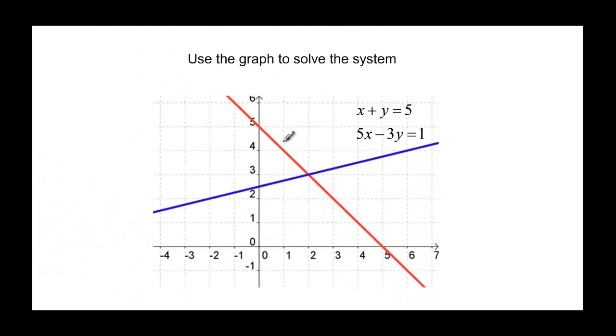Well graphing is one of the ways that we can solve systems, and so we're going to look at some graphs and see if we can find the solution. Now this first red line here, that is x plus y equal 5, and the blue line is the 5x minus 3y equal 1.